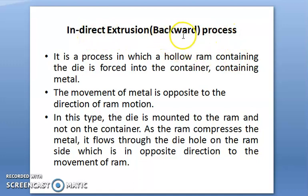It is also called the backward extrusion process. First, we see what is meant by indirect extrusion process. It is a process in which a hollow ram containing the die is forced into the container containing the metal. The indirect extrusion is also called the backward extrusion process because this type of extrusion process wherein the work metal flows in the direction opposite to the ram movement.